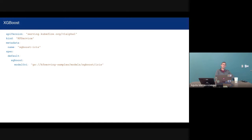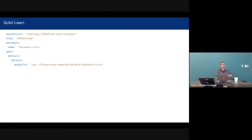XGBoost is just the same — the only difference is that you're selecting XGBoost instead of TensorFlow. But the customization parameters of XGBoost and TensorFlow will differ, so you might see slightly different ones depending on what type of parameters you're passing in. For TensorFlow, this might be the session parallelism or the batch size. And scikit-learn is the same story.